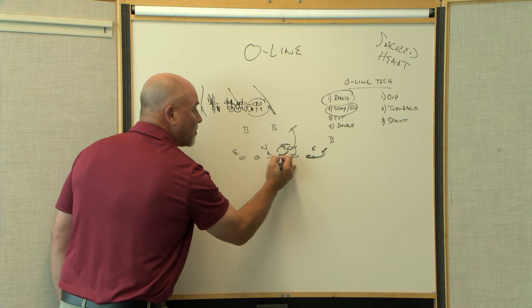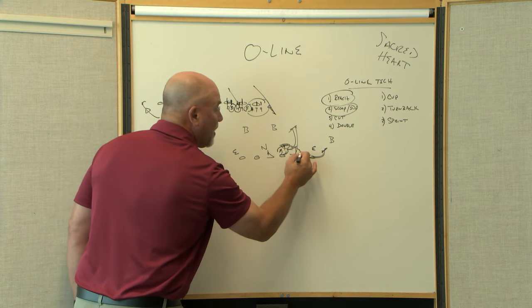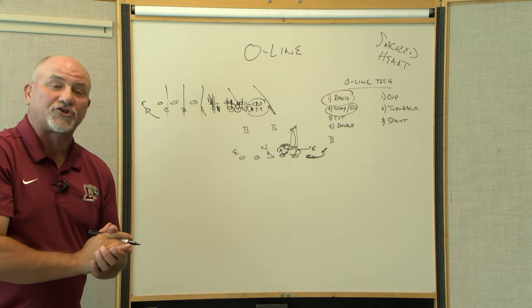Whoever comes off—if that tackle goes inside, guard stays, tackle goes up. If he continues to go, he can push him out, the guard can go up. So that's a slip or what we call a scoop block.